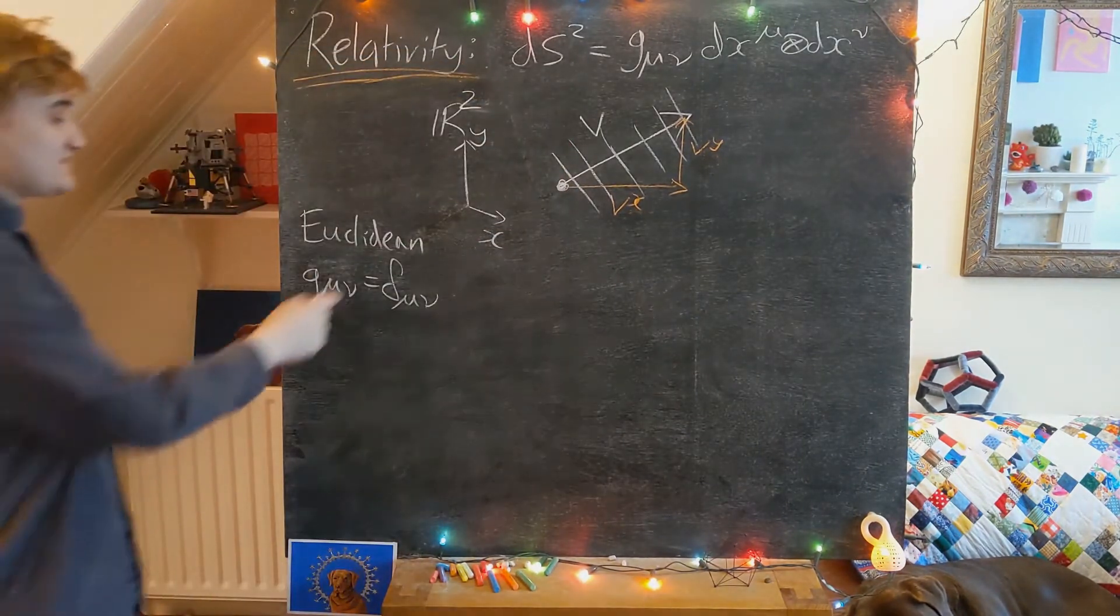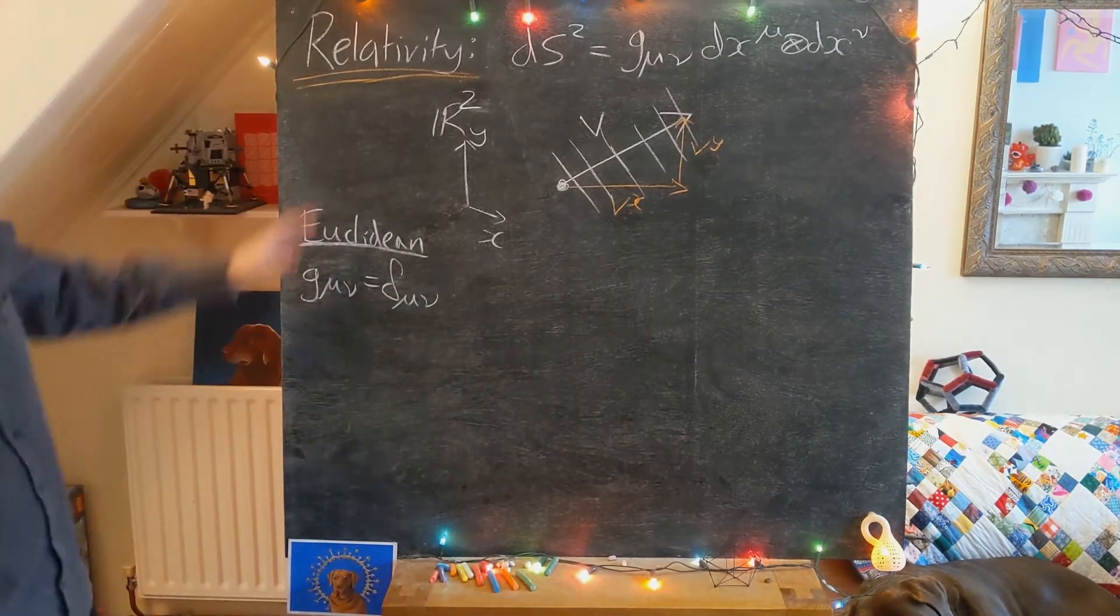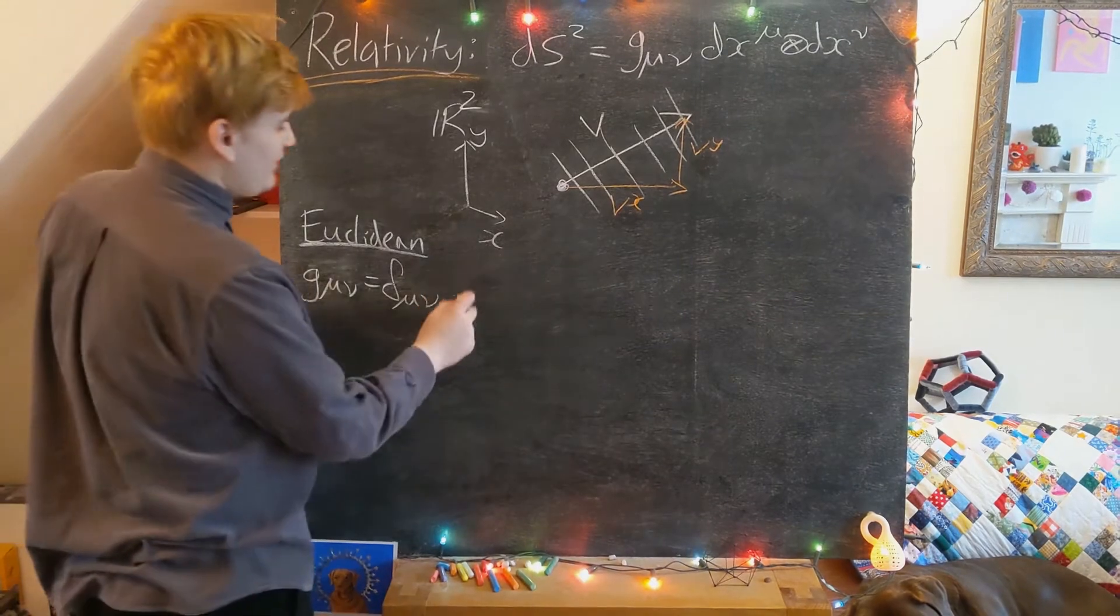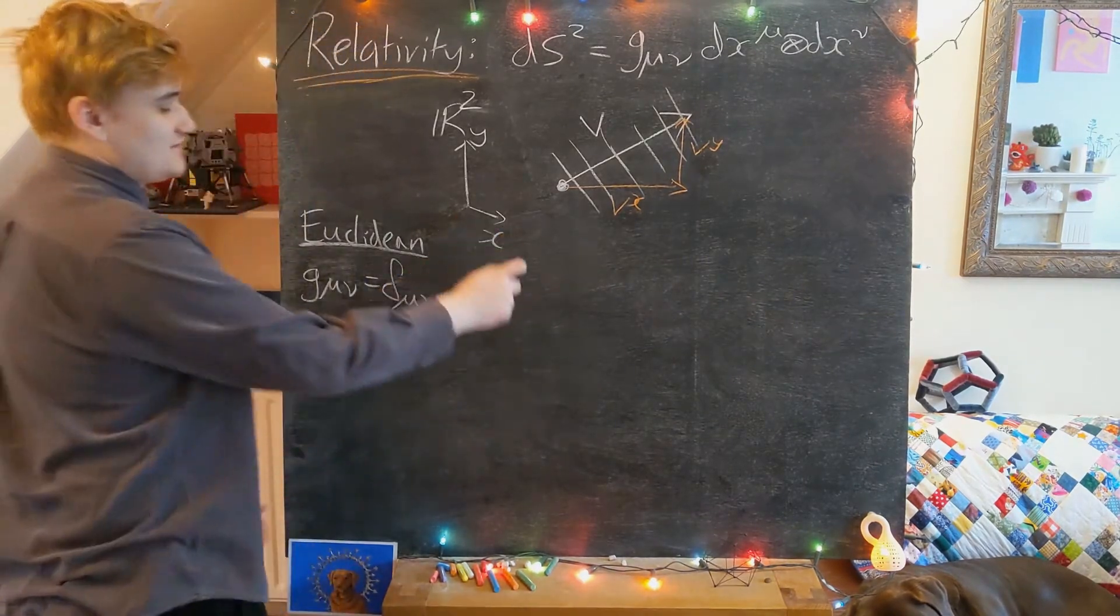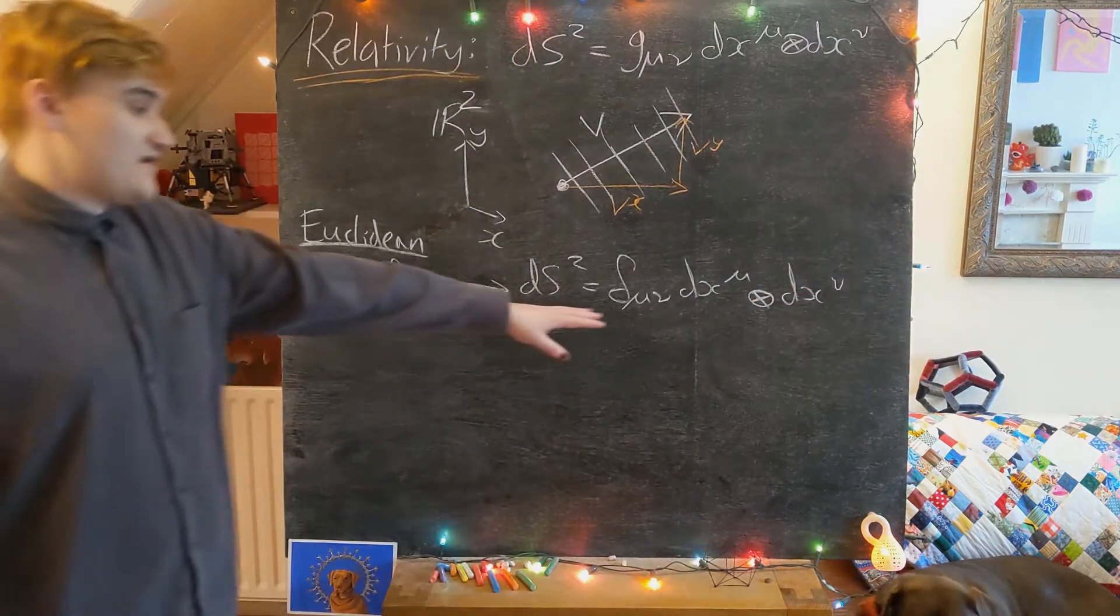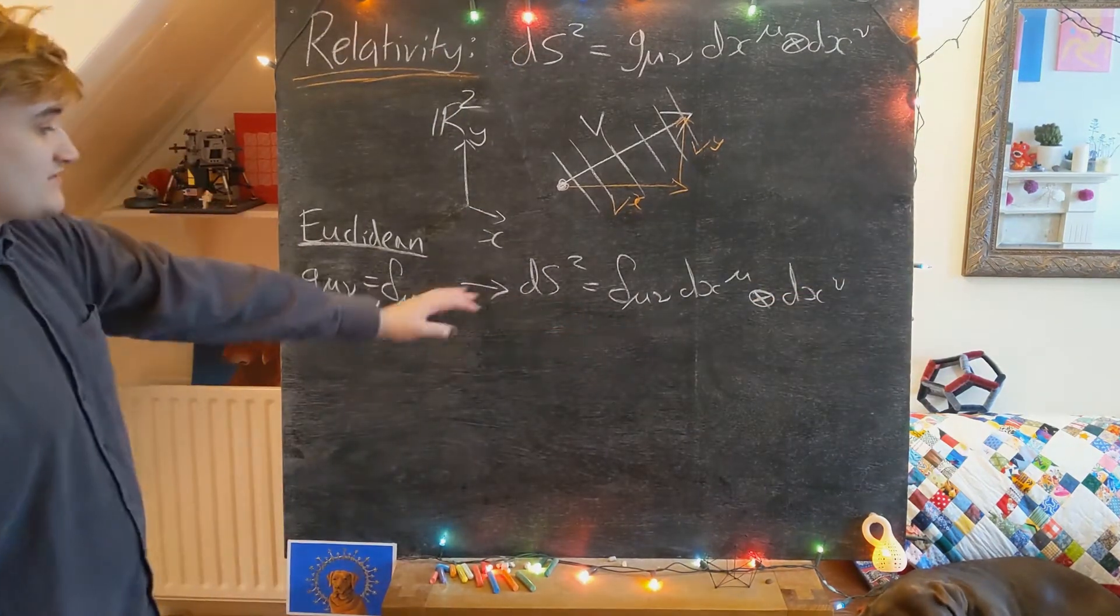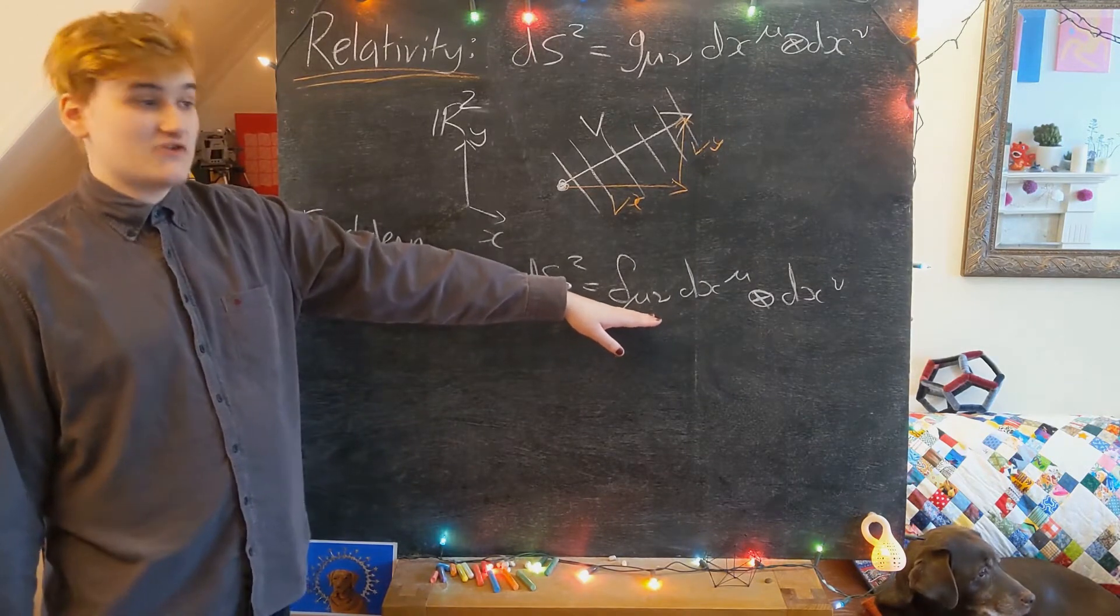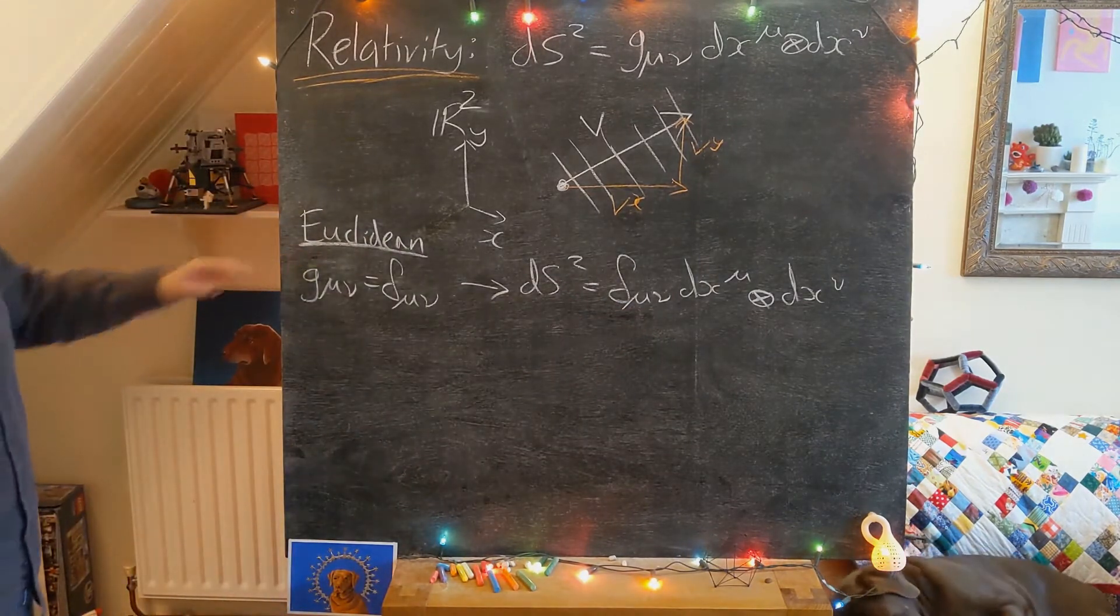And now what we realize happens to our metric, we can essentially just now express the line element for Euclidean space as the following. So we might as well have not even bothered writing this down, but just leaving it there for completeness. This is the metric components of the Euclidean metric - it's just the identity matrix.